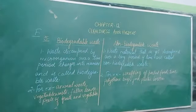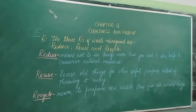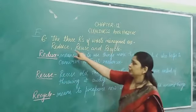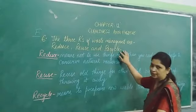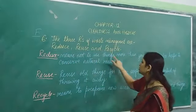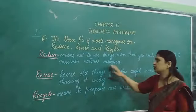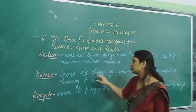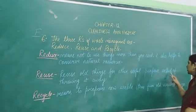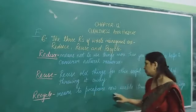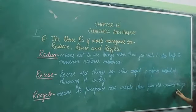Now come to question number 6. Your sixth question is: explain the 3 R's of waste management. How can we follow them? The 3 R's of waste management are: Reduce, Reuse, and Recycle. Reduce means not to use things more than you need — it also helps to conserve natural resources. Reuse means to use things for other useful purposes instead of throwing them away. Recycle means to prepare new usable items from old unused things.